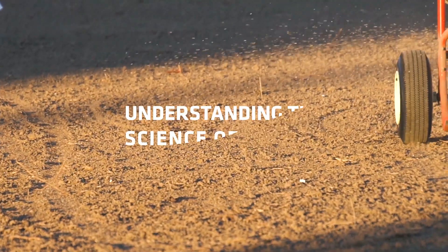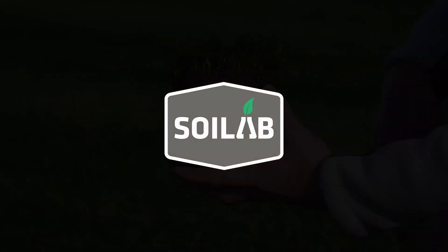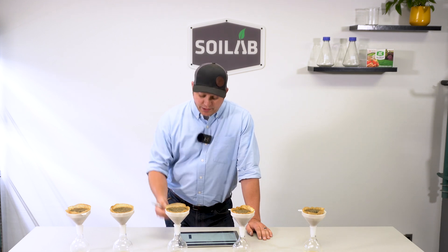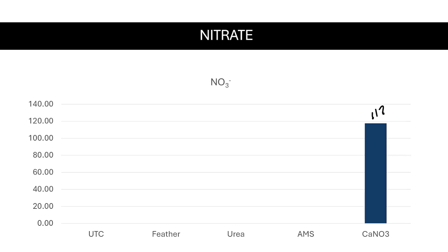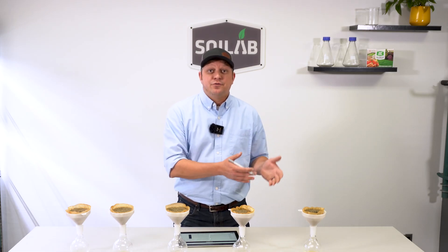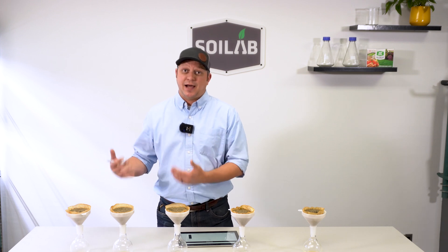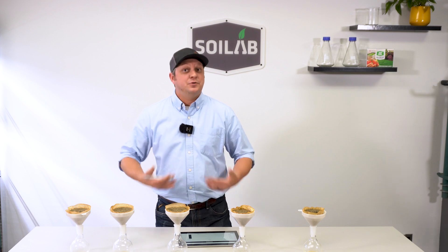Let's dive into the data and see what we learned. The first number I want to look at is nitrate in terms of parts per million that were leached through. We leached right at about 117 parts per million of nitrate when we applied calcium nitrate. When we look at the untreated control — the one that received no fertilizer — we got basically no nitrate leaching. The feather meal, urea, and ammonium sulfate also didn't have any nitrate leaching, because they hadn't yet converted to ammonium and then nitrate — we irrigated these the day of application. So we saw the nitrate move.